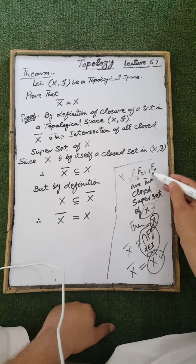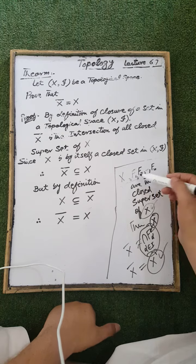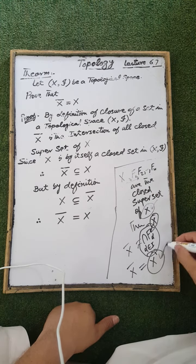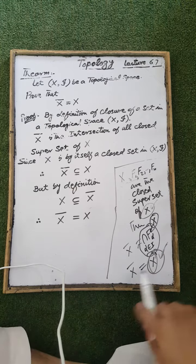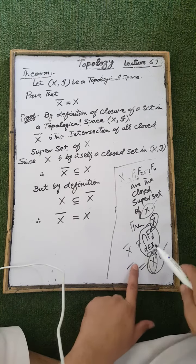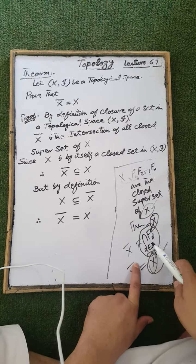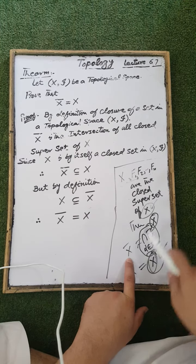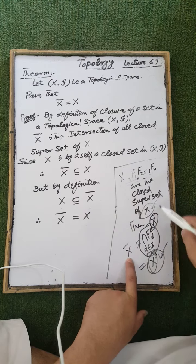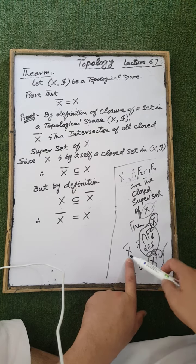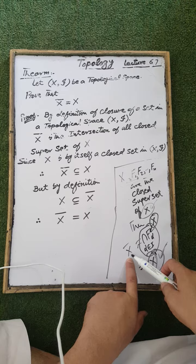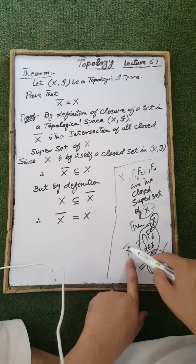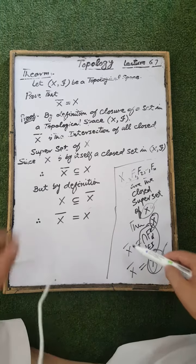From the intersection of these sets, we get the minimum superset of the ground set X, which is the set X itself. That is, the intersection of the closed supersets of X gives us the closure of X. All these sets are closed supersets of X, so the closure of X is obtained.